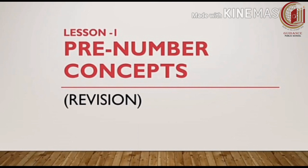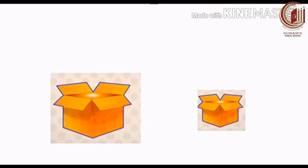Comparison of objects. We will look into a few examples. Look at these boxes. There are two boxes. Are you able to see? What is the color of these boxes? Yes, it is yellow.